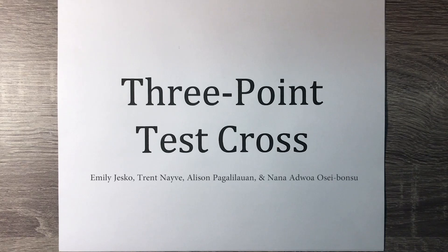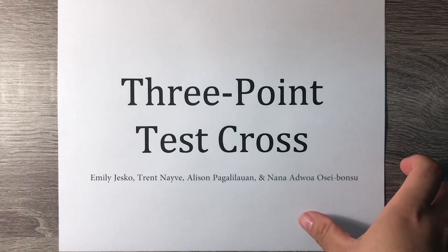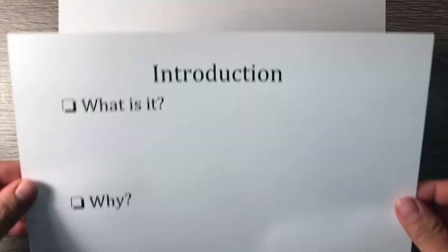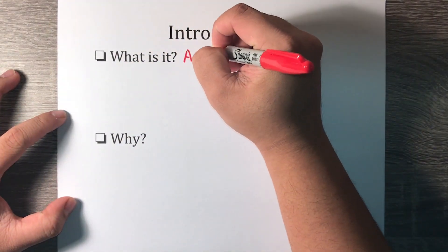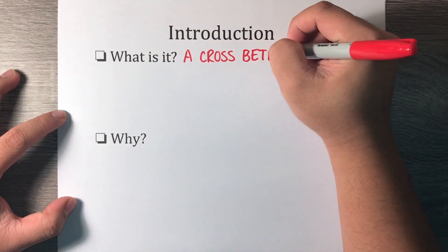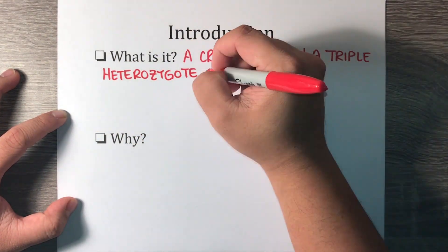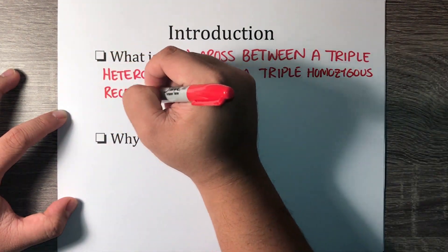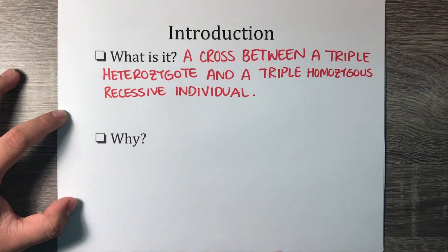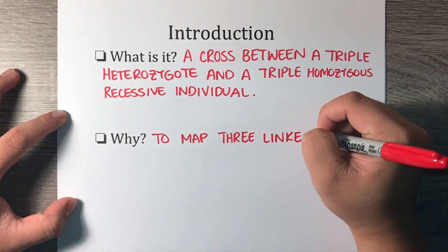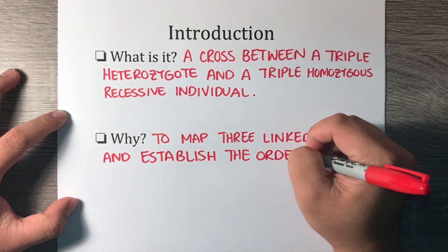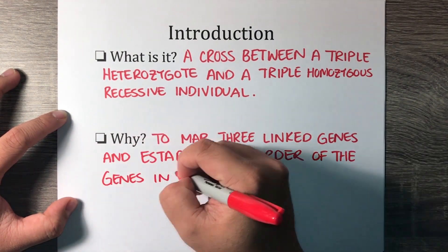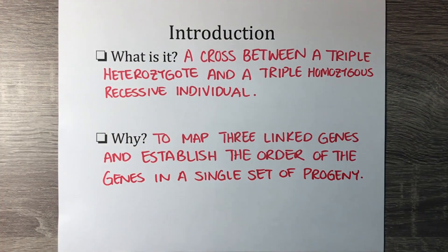This video will show you how to conduct a three-point test cross. A three-point test cross is a cross between a triple heterozygote and a triple homozygous recessive individual. It can be used to map three linked genes and establish the order of the genes in a single set of progeny. Double crossovers can usually be detected, providing for more accurate map distances.